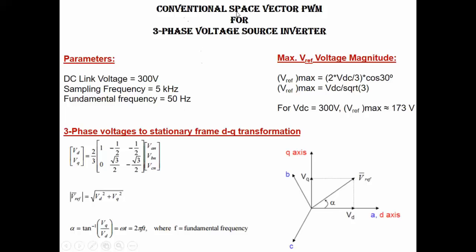To understand this technique you can easily refer to some literature which is already available on the internet. Basically in this technique we do a 3-phase voltage transformation into 2 orthogonal vectors in the stationary reference frame — sometimes we call it DQ transformation. Here I have shown a transformation matrix, and from this matrix we can easily get the magnitude and angle of the reference voltage vector.